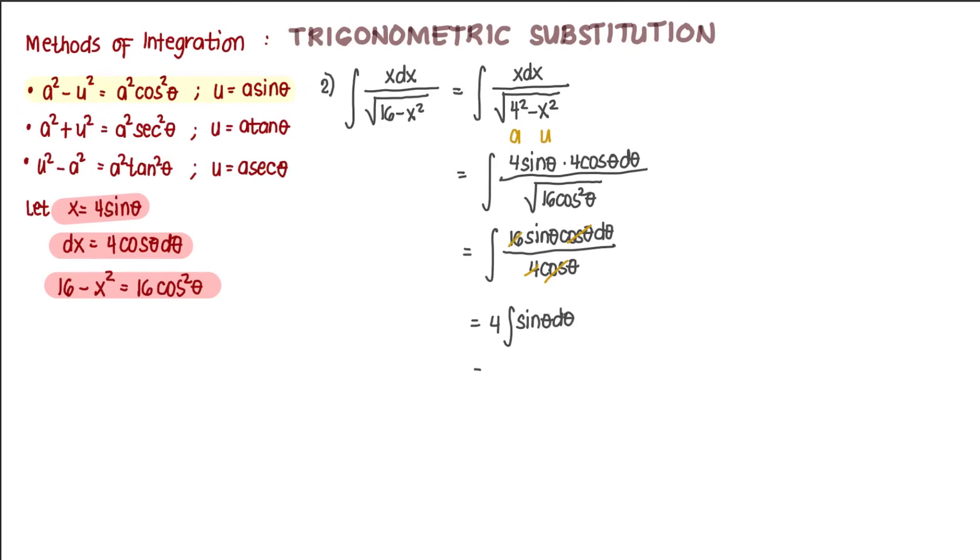So that's already integrable. That's 4 times negative cosine theta, plus c, or negative 4 cosine of theta, plus c.